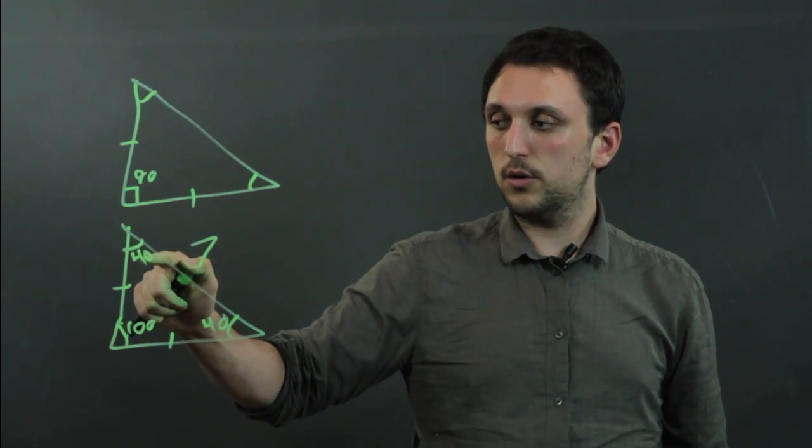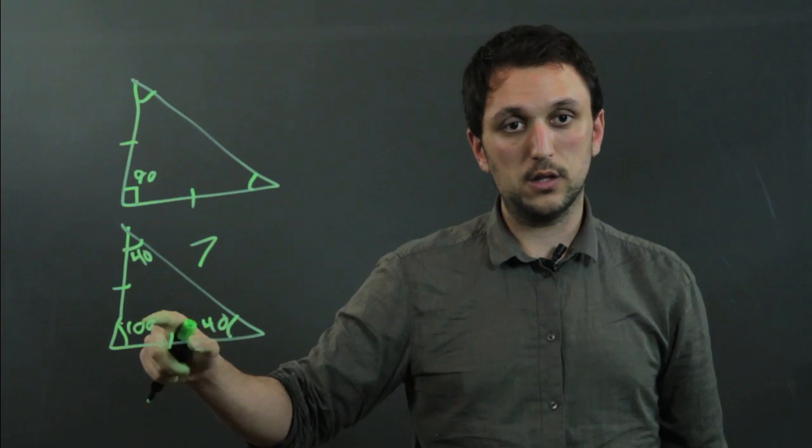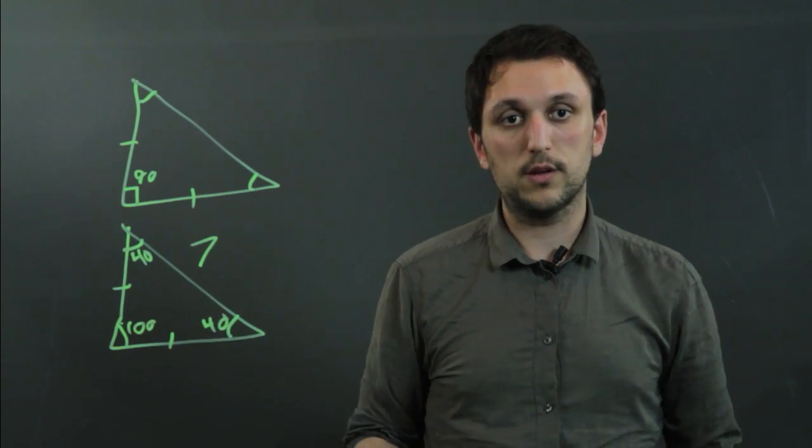And we know that an angle of 40 opposite a side, the side cannot be equal to the side opposite the angle of 100. So again, the triangle is isosceles.